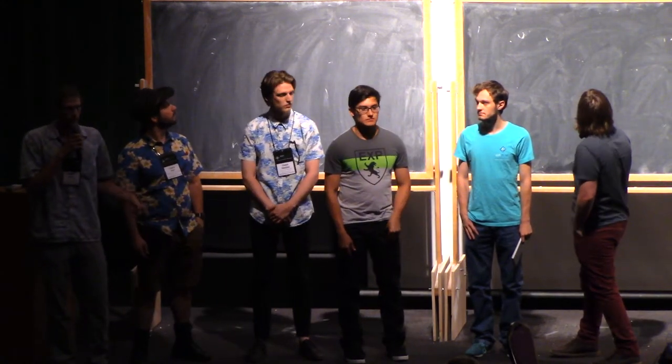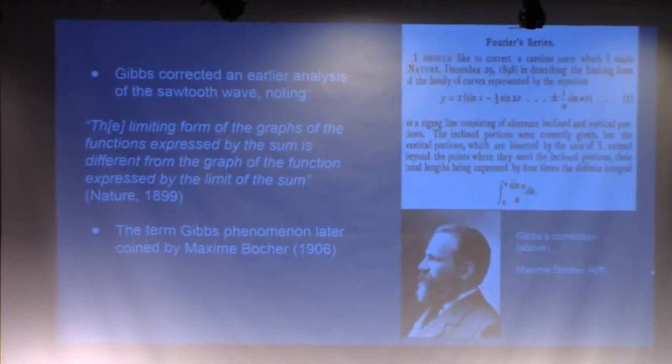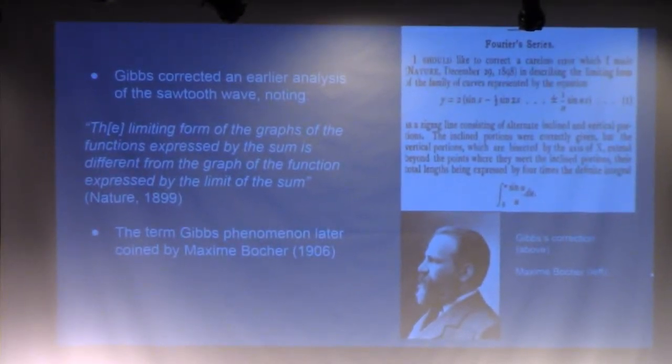The paper that Gibbs originally noticed the phenomenon was analyzing the convergence of Fourier series to the sawtooth wave, wherein he noticed that no matter how good of an approximation you made to the sawtooth wave, you still got an error, and it would never converge to the actual function that you're trying to approximate.